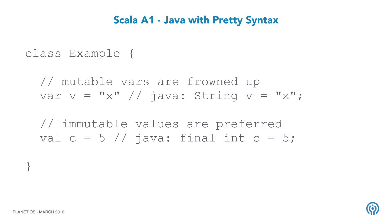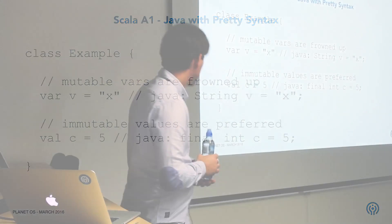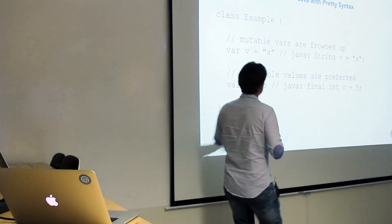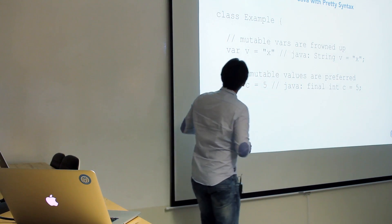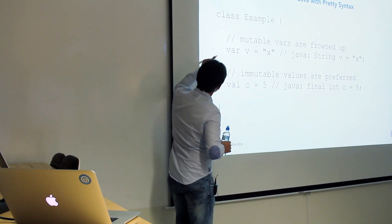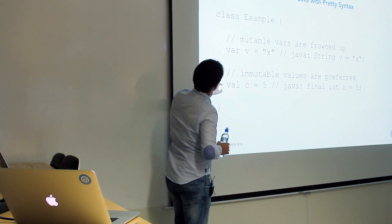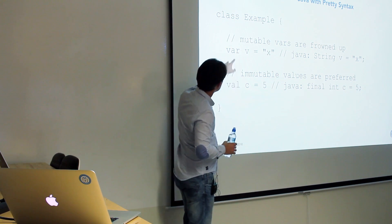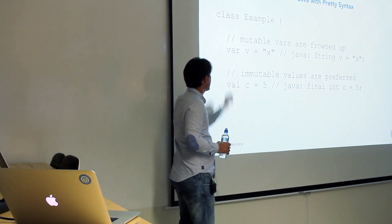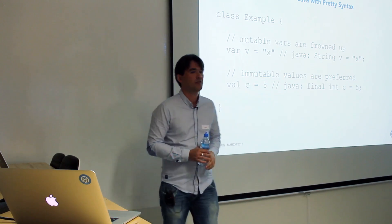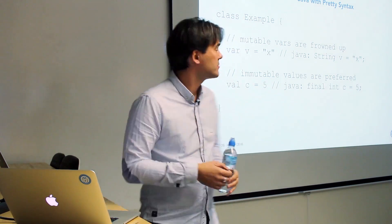Here is Scala as Java with pretty syntax. This is the class, and here is the syntax for mutable variables versus immutable values. What I don't like about Scala is that the difference between mutable and immutable is just one letter — and they're similar letters. If it ends in 'r' it's immutable (val), and if it's 'var' it's mutable.